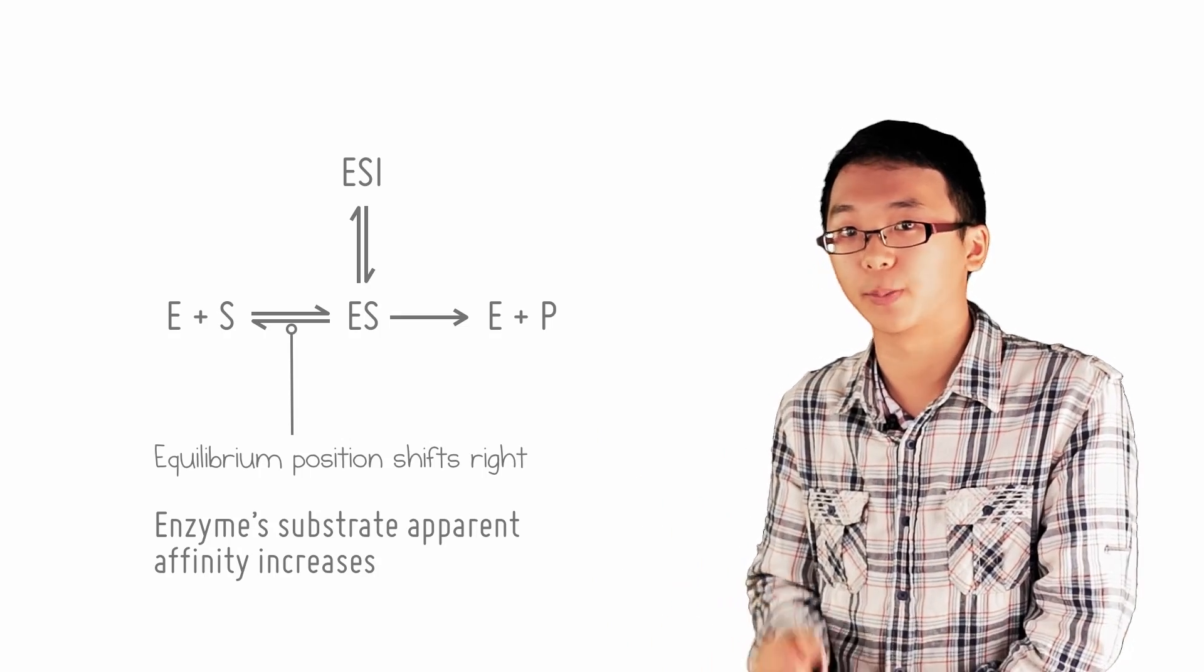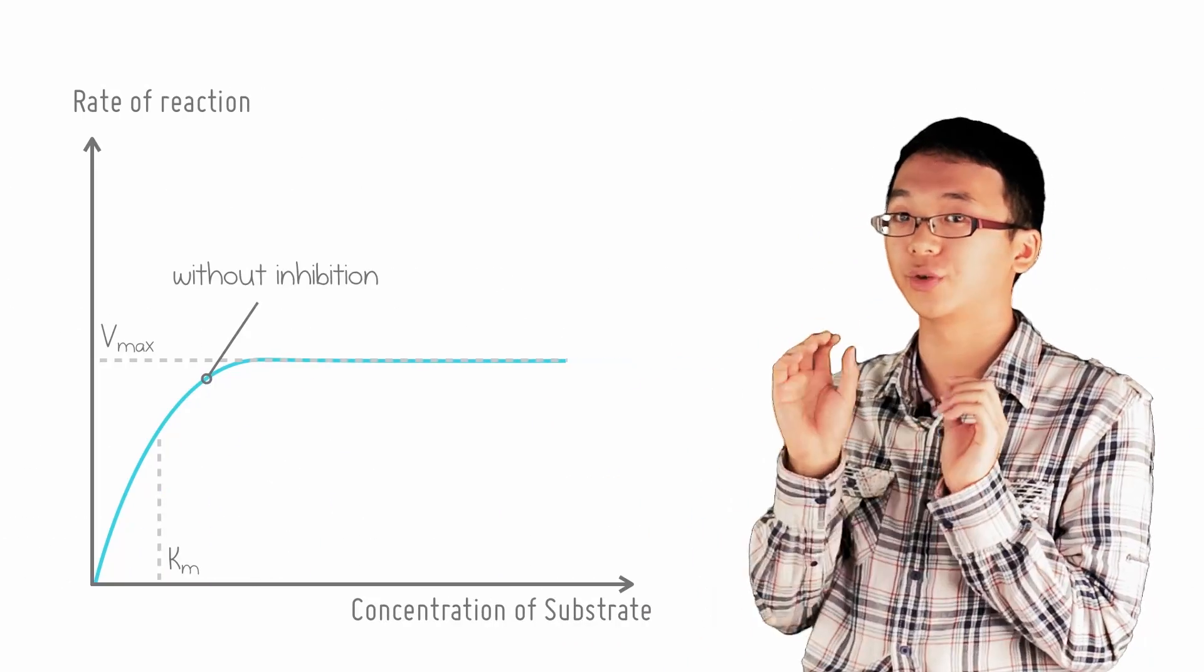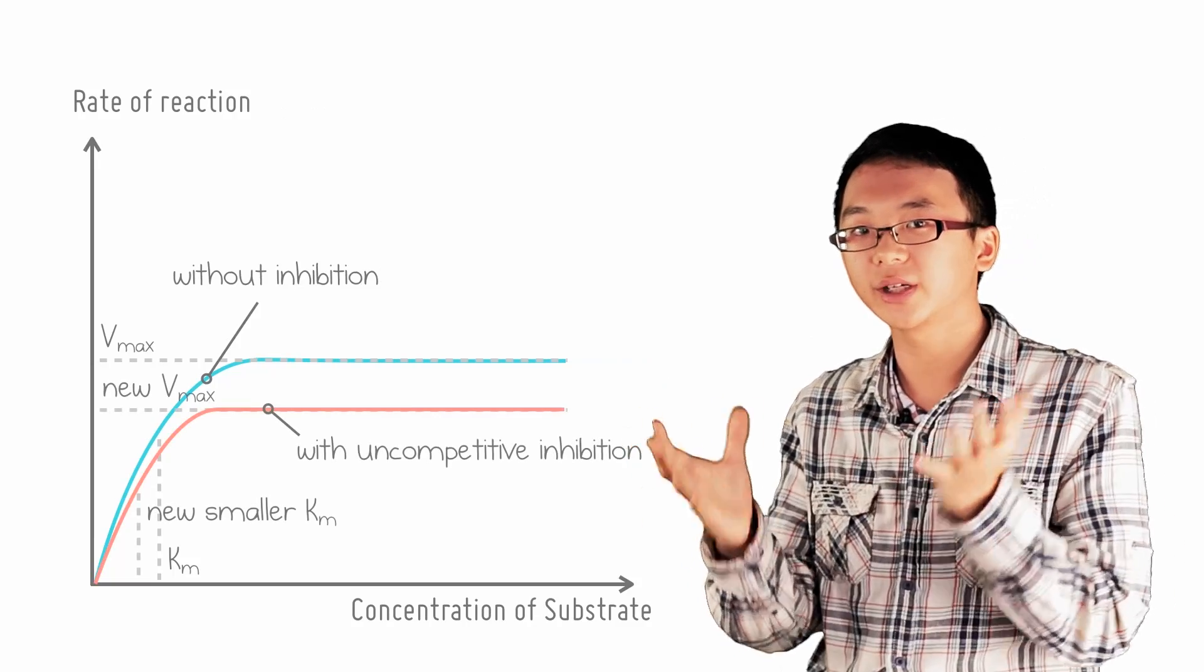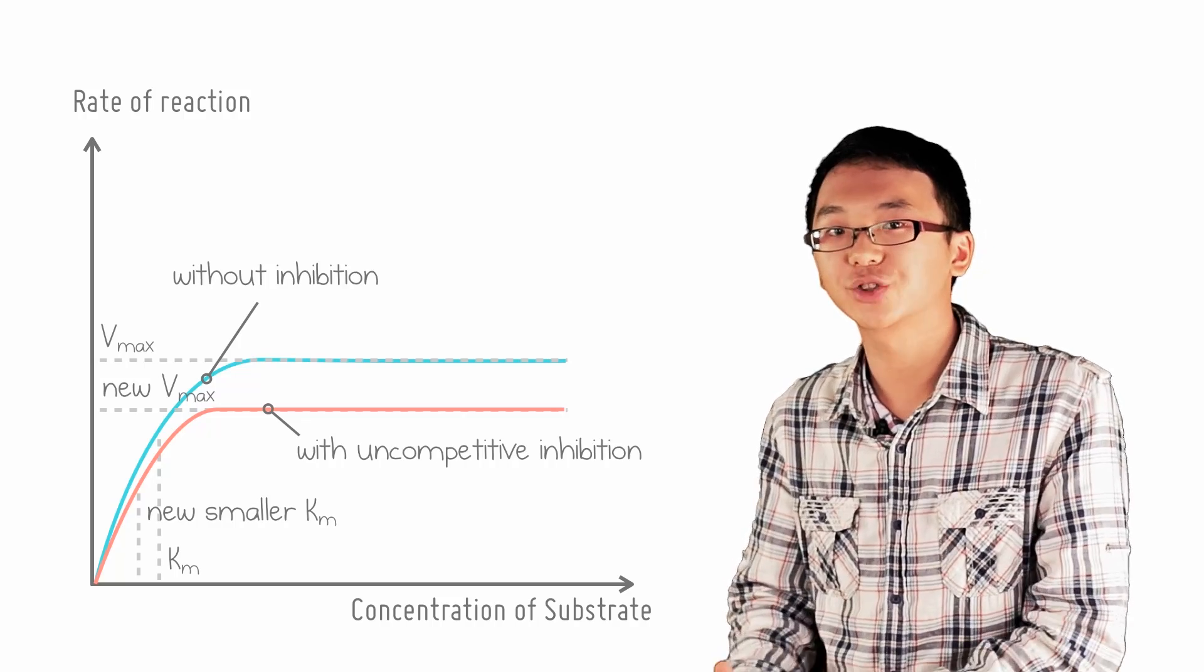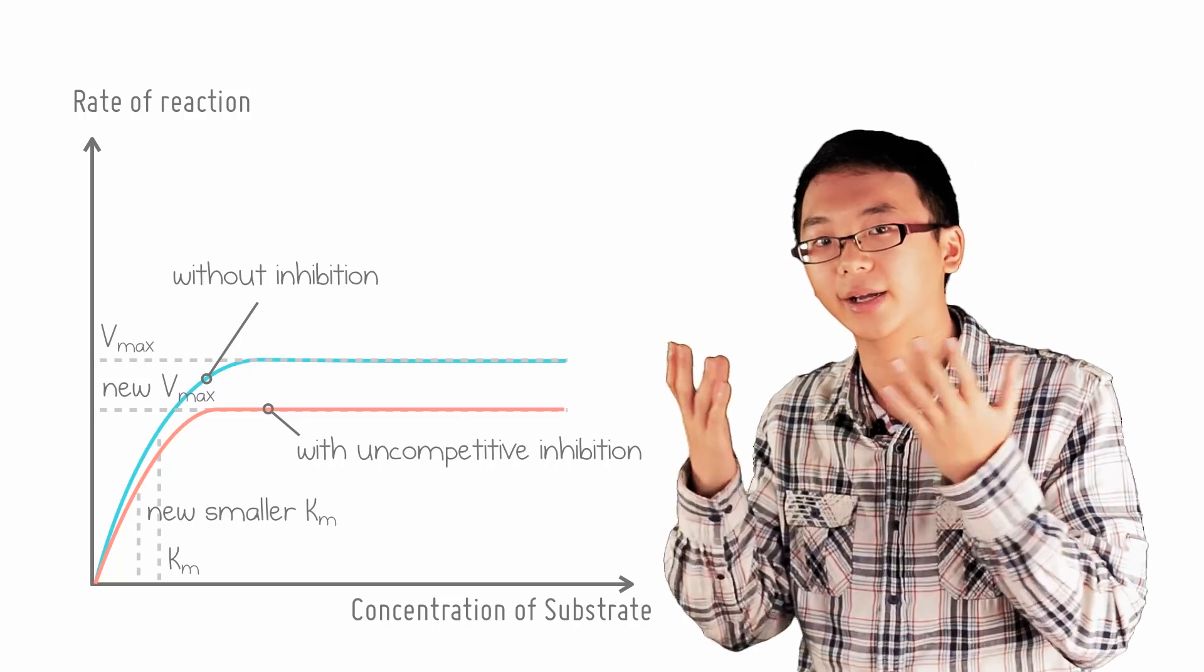The net result is essentially a smaller Km because of the apparent increased affinity and a reduction in the maximum rate Vmax due to the inhibition that cannot be countered by adding more substrate.